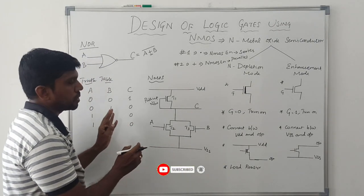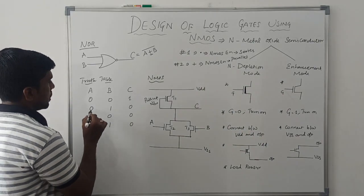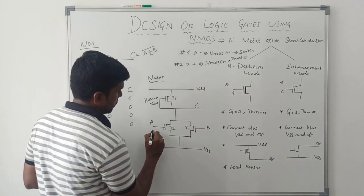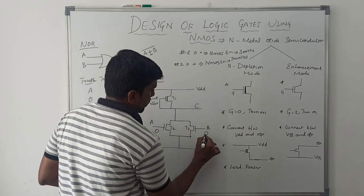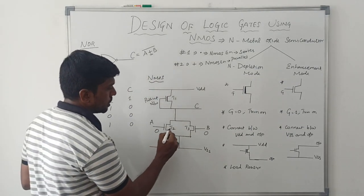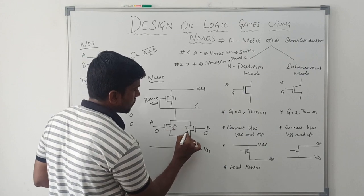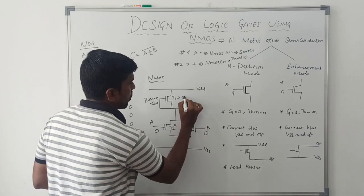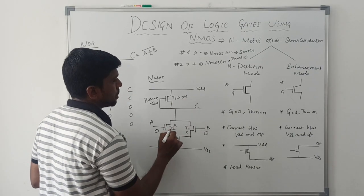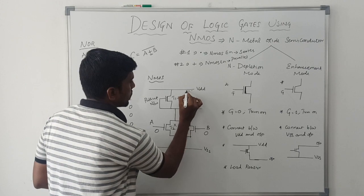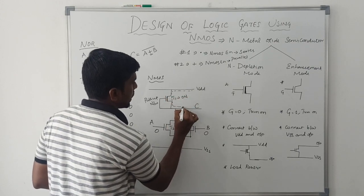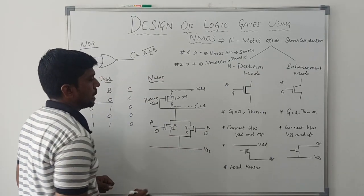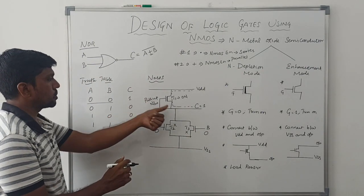Now I am going to verify the output with the truth table. Taking the first input value: A=0, B=0. In this case T2 transistor turns off and T3 transistor turns off. T1 transistor always turns on because it is a load resistor. So VDD is directly connected to the C output, and the output value is 1. Both the truth table and circuit values are the same.